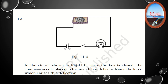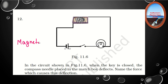Question 12: In the circuit shown, when the key is closed, the compass needle placed in the match box deflects. Name the force which causes this deflection. An electric circuit is formed and a coil is wound over the compass needle. When the switch is on, current passes through the conductor and creates a magnetic field. So the force responsible for the deflection of the compass needle is magnetic force.